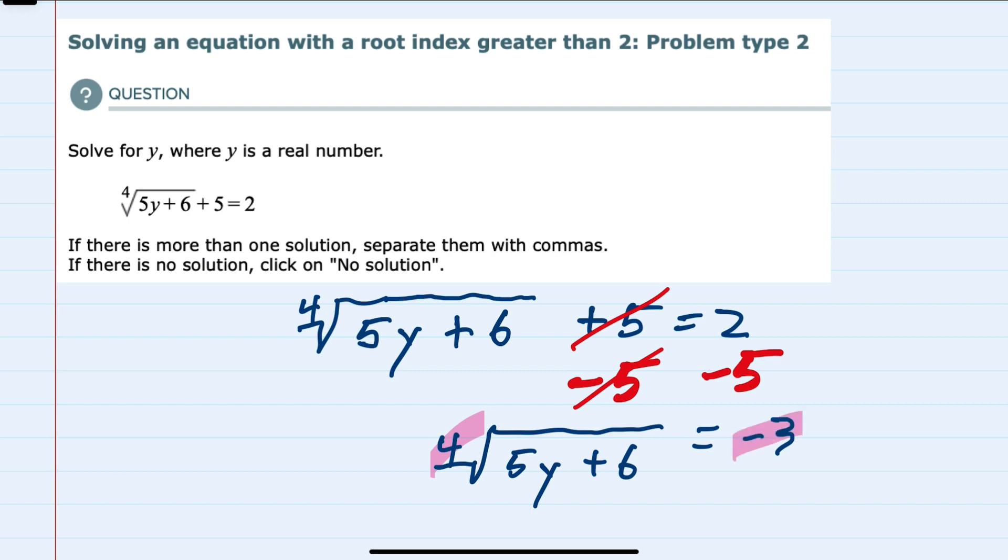And where we're working with real numbers we can't have an even root equal to a negative number. So instead of proceeding and raising both sides to the fourth power I recognize that this is going to be a no solution.